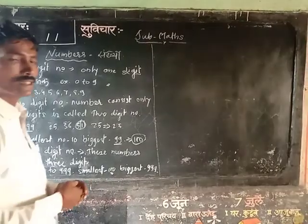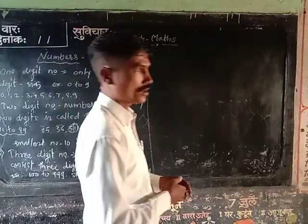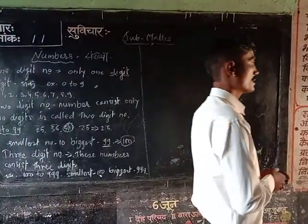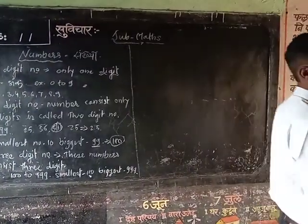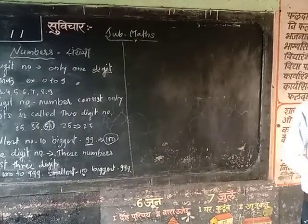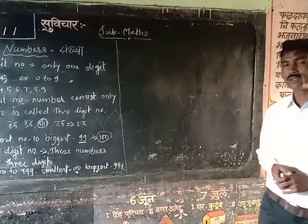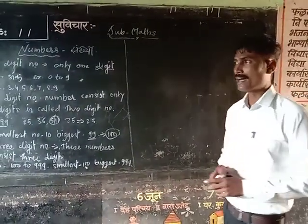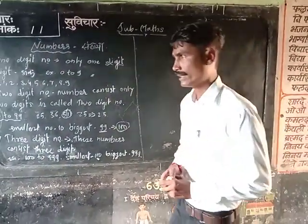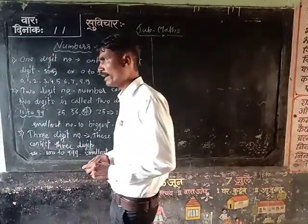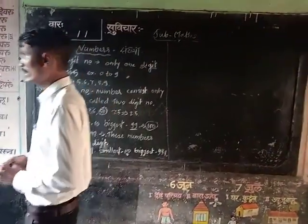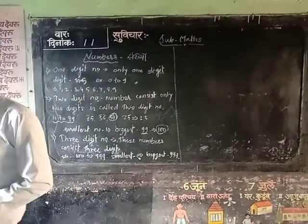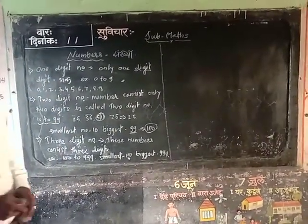In a 1-digit number, only 1 digit is present. In a 2-digit number, 2 digits are present. And in a 3-digit number, there are 3 digits present.